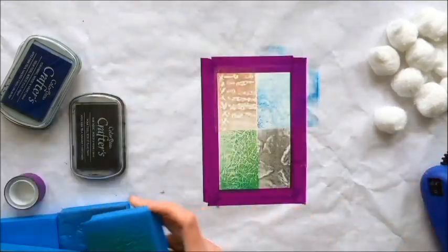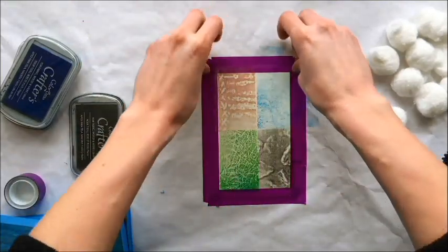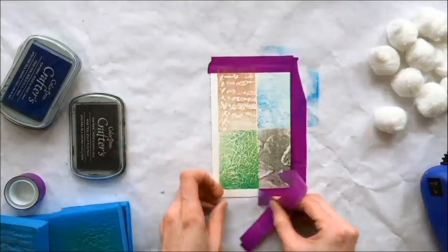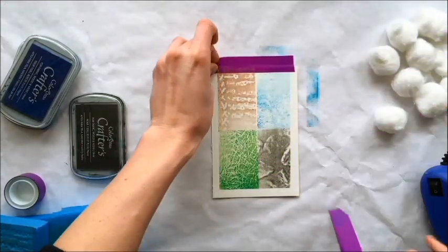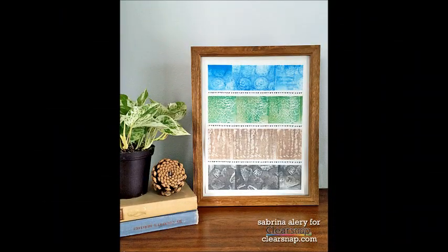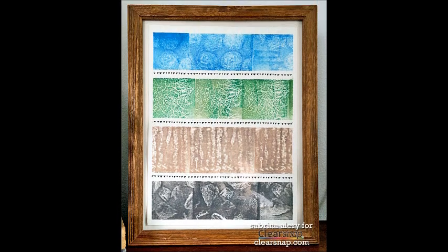So we're going to stamp the grass and the bark with our Desert Sand and Bark inks. And then for the green, we have the new shades Evergreen and Jungle.